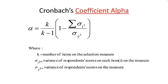Cronbach's coefficient alpha is similar to an average inter-item correlation of all possible pairs of items in a scale measured continuously. To maximize reliability using this measure, we need maximum variance on the items and overall scores — some respondents giving low scores, some medium, and some high. If everyone gives the same response to every item, alpha reliability is 0 because score variance is 0.